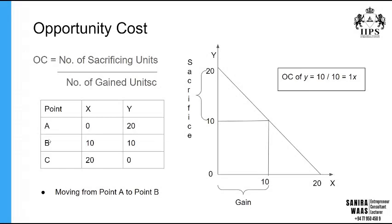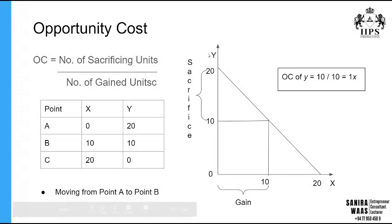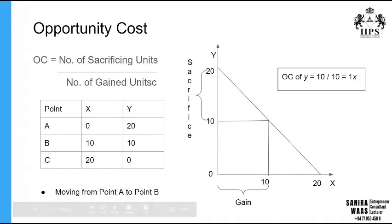Let's calculate the opportunity cost of moving from point A to point B. You need to identify the sacrificing units and the gaining units. You can see you will gain 10 units of X — from 0 to 10 on the graph. On the other side, you sacrifice 10 units of Y, because you can no longer produce 20 units of Y when you must produce 10 units of X. You have a limited resource stock, as mentioned in the production possibility curve topic.